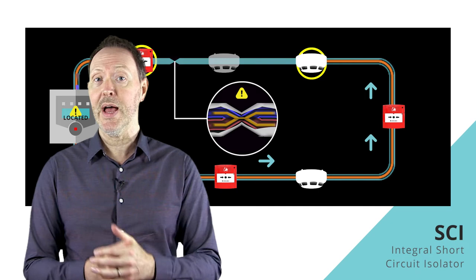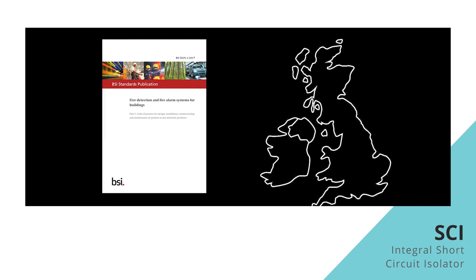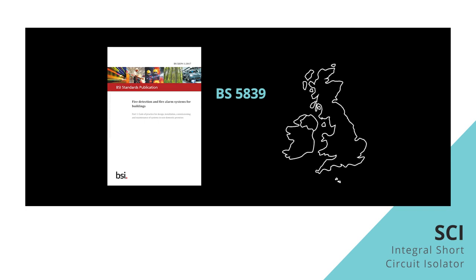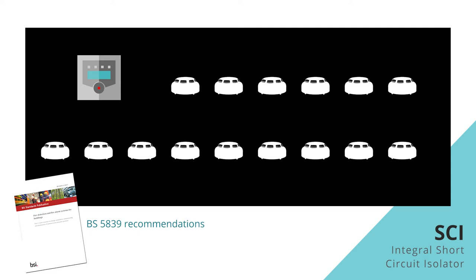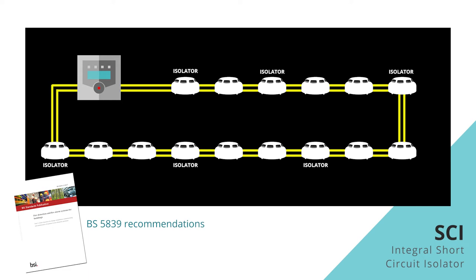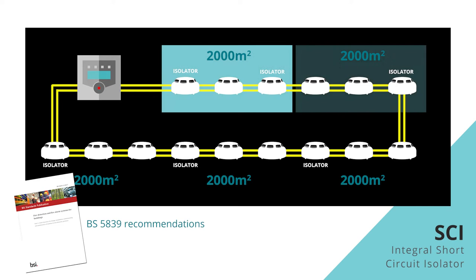Well, it's simply down to the standards for the specific region. Take BS 5839, for instance, for our industry in the UK. It's the go-to guide to design and installation of commercial fire detection systems. In BS 5839, it is recommended that an isolator is only required once in every zone, and that a zone could be anything up to 2,000 square meters. In other words, it's perfectly acceptable to lose a whole zone due to a short circuit on the loop.